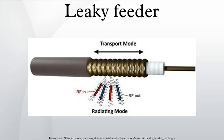An alternative to using leaky feeder in underground railways is to use a distributed antenna system. A DAS system was deployed in some New York City subway stations by Transit Wireless to provide WiFi and mobile phone and data coverage for customers.